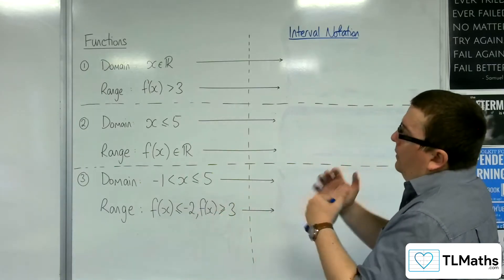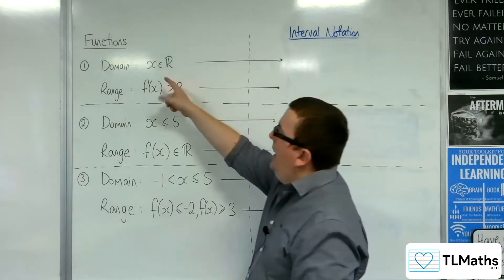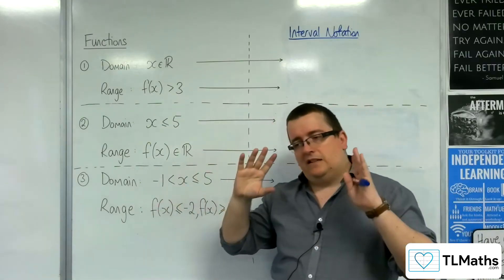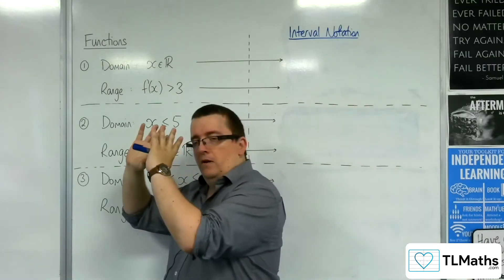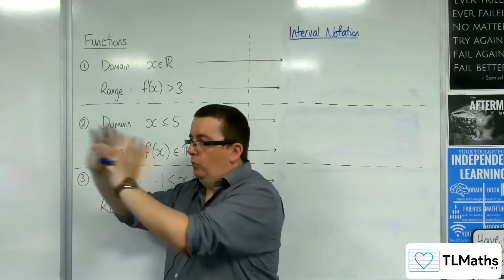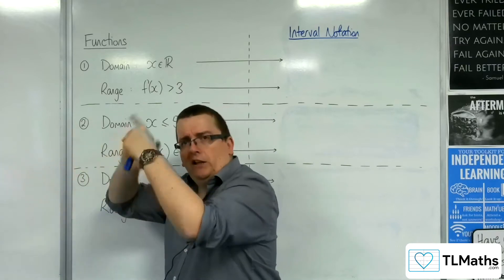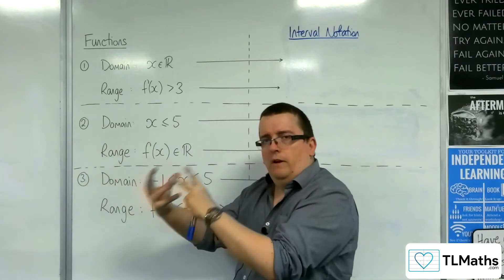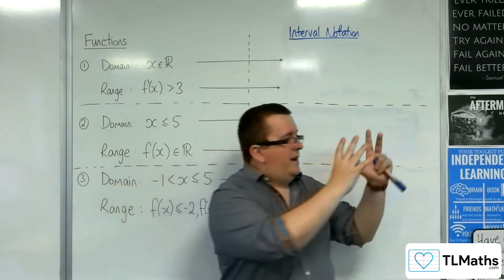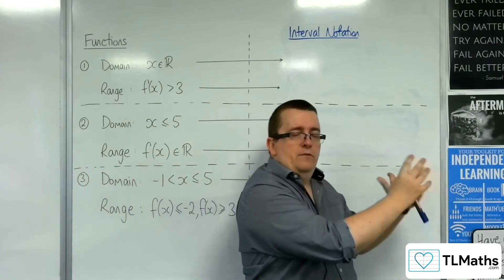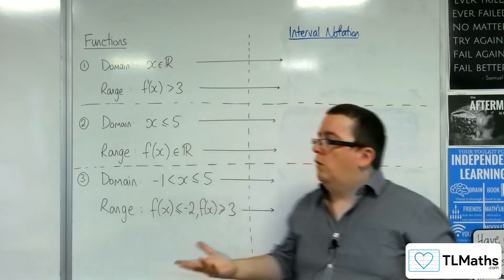So, when we say the domain x can be any real number, what we're really saying is that x can be any real number from negative infinity, so all the way down there, but obviously not including negative infinity because that's not a number, all the way up to positive infinity, but obviously not including positive infinity because that's not a number either.